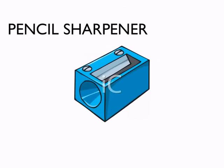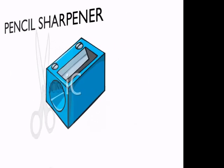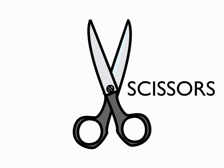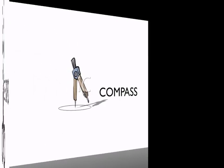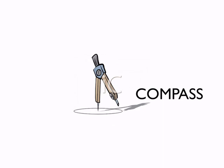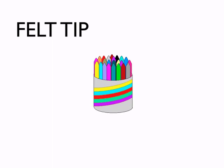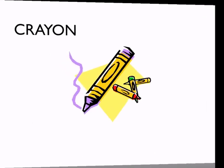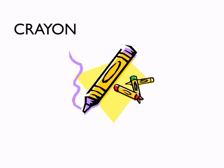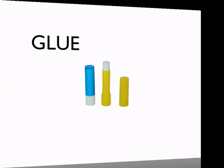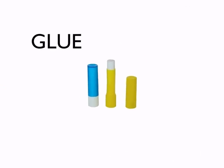Pencil sharpener — repeat after me: pencil sharpener. Scissors — please repeat: scissors. Compass — repeat after me: compass. Highlighter — repeat: highlighter. Felt tip — repeat after me: felt tip. Crayon — repeat: crayon. Glue — please repeat: glue.